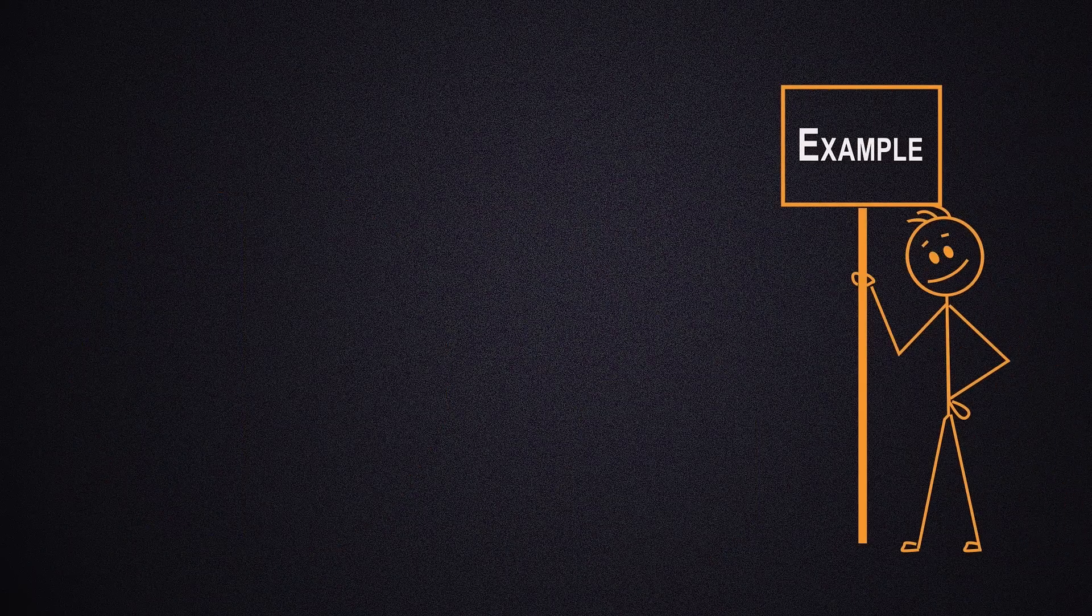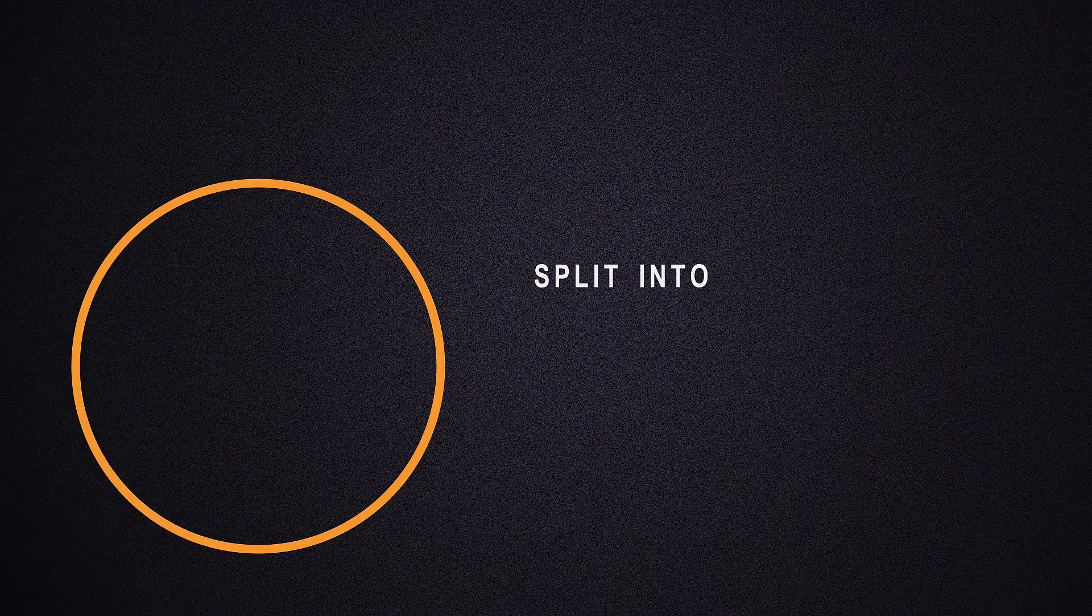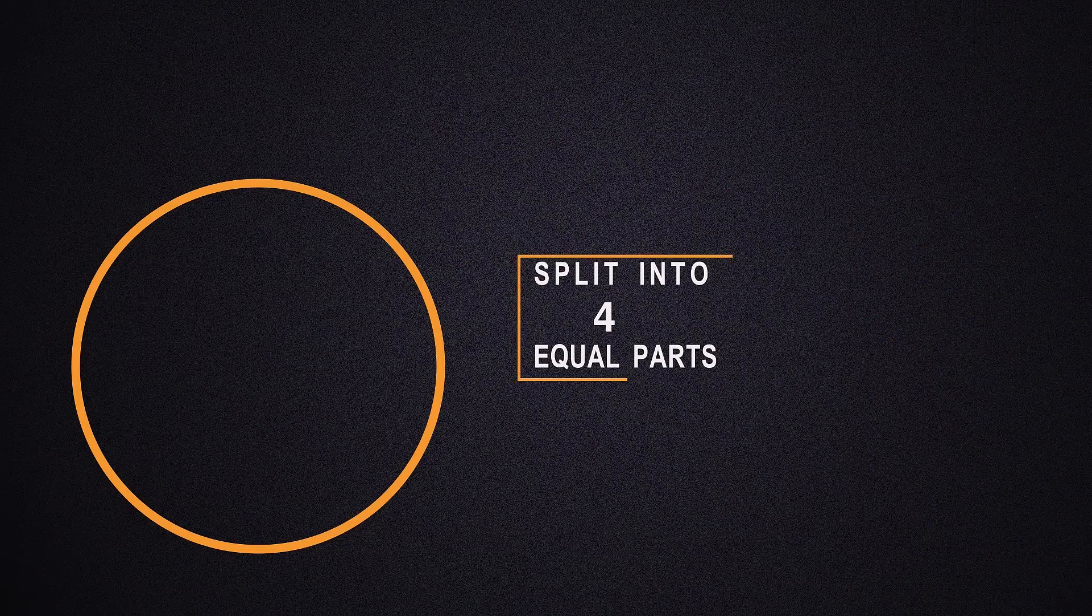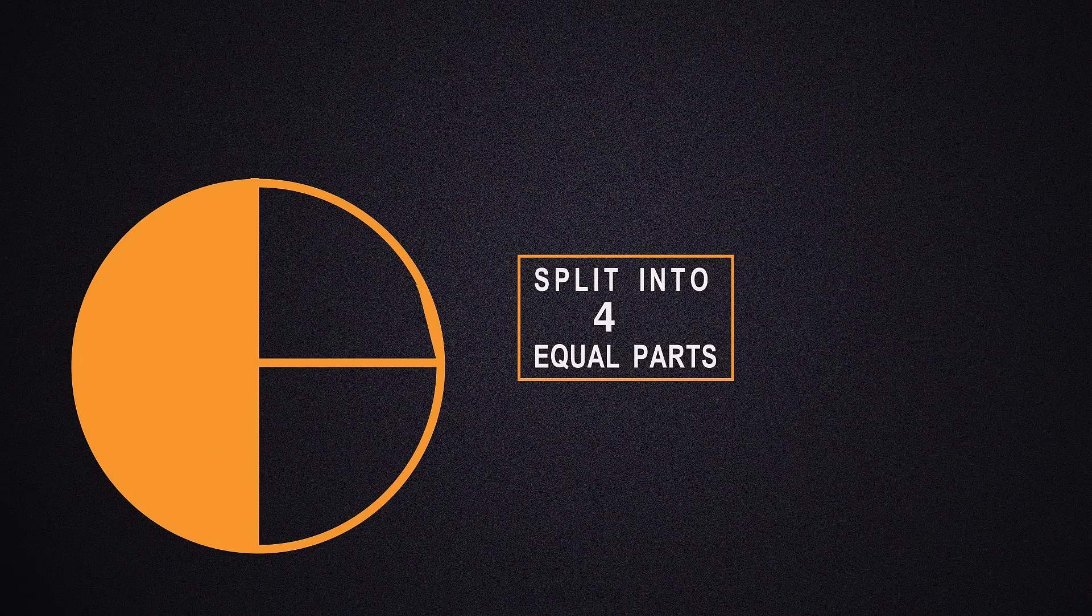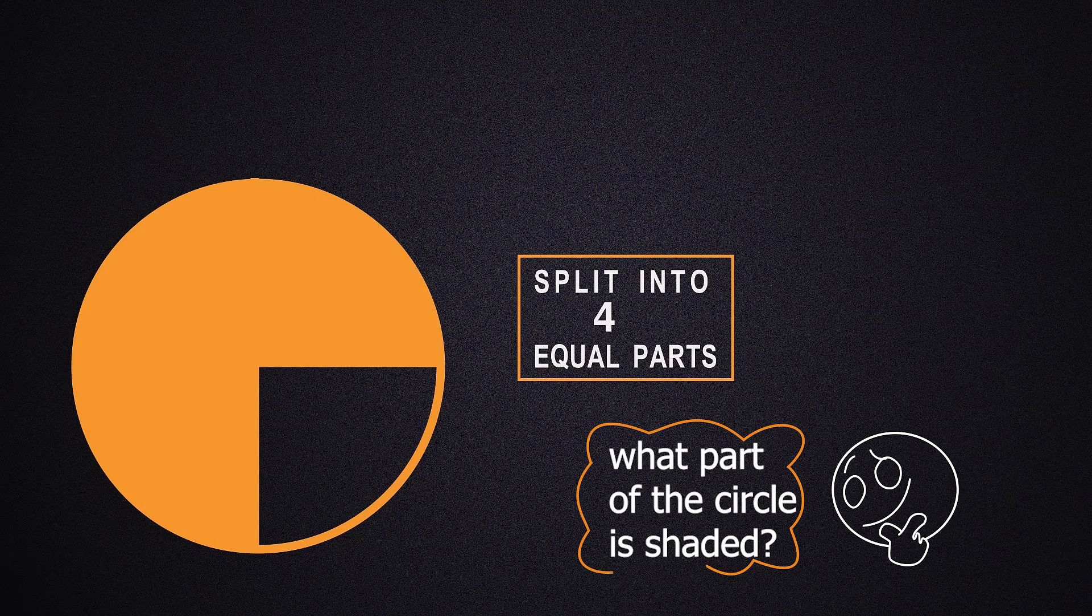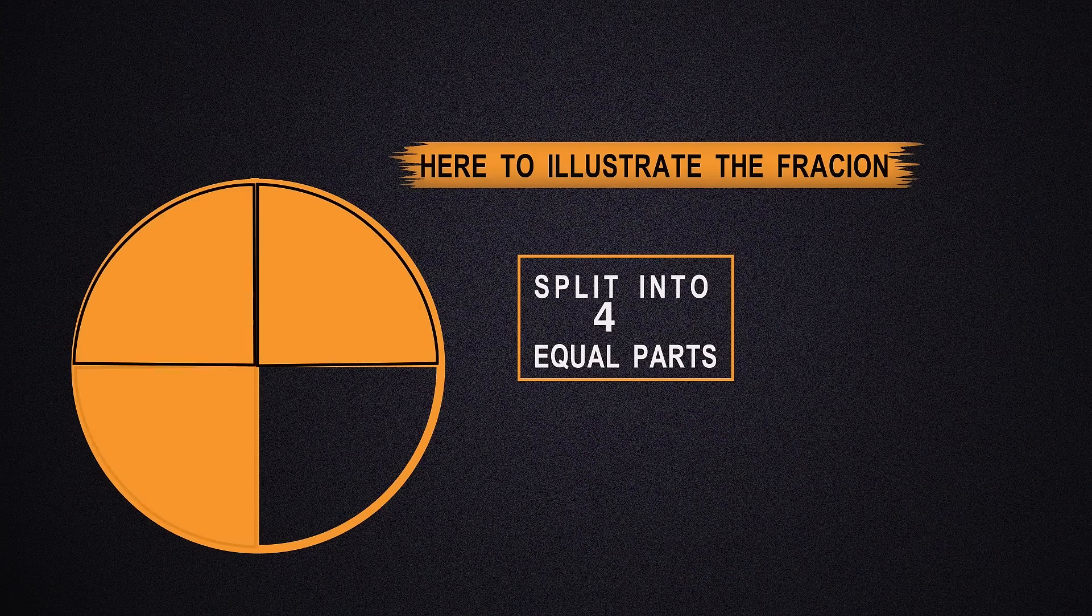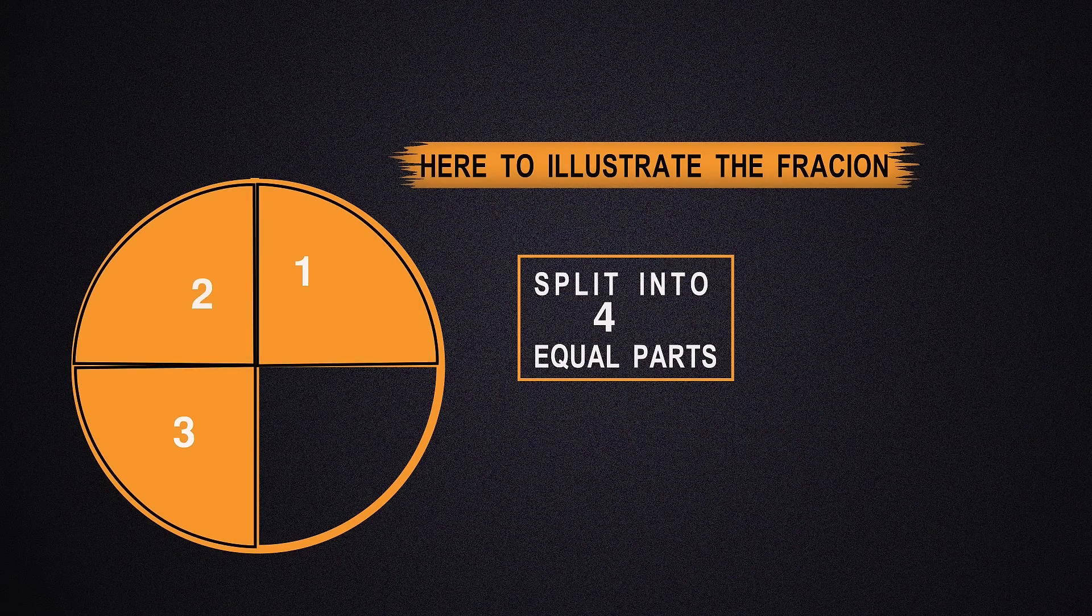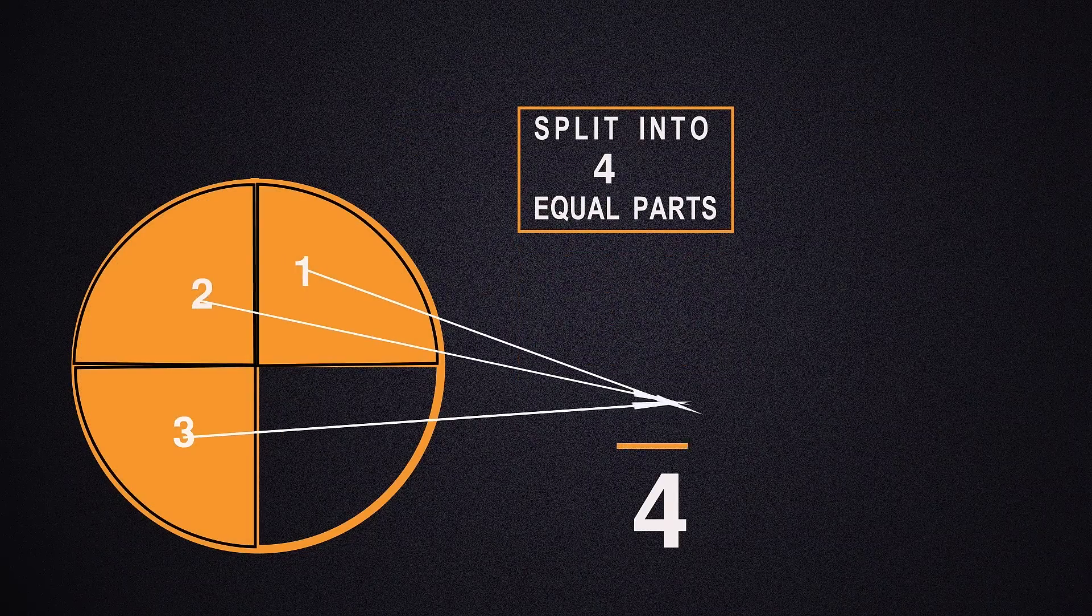Now let's look at another example. Suppose I have a circle and I split it into four equivalent parts. I shade three parts, so what part of the circle is shaded? Here to illustrate the fraction, three of those four parts are shaded. This will be written in the form as three quarters.